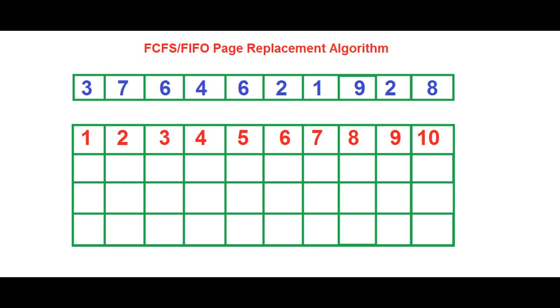FCFS is actually pretty easy. What you have to do is replace the oldest element in the memory buffer with the new one which wants to come in, in case there's no space available.